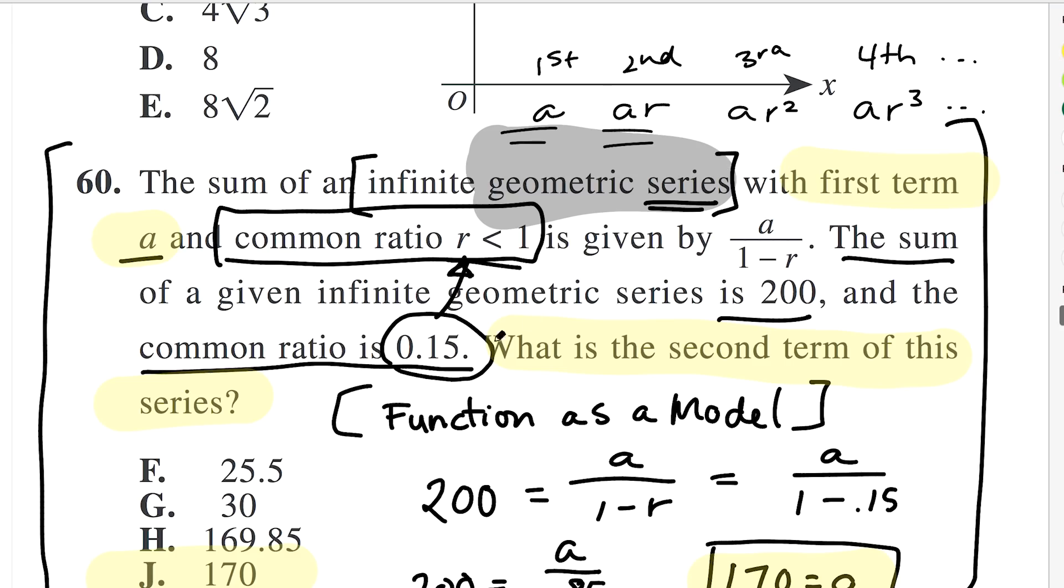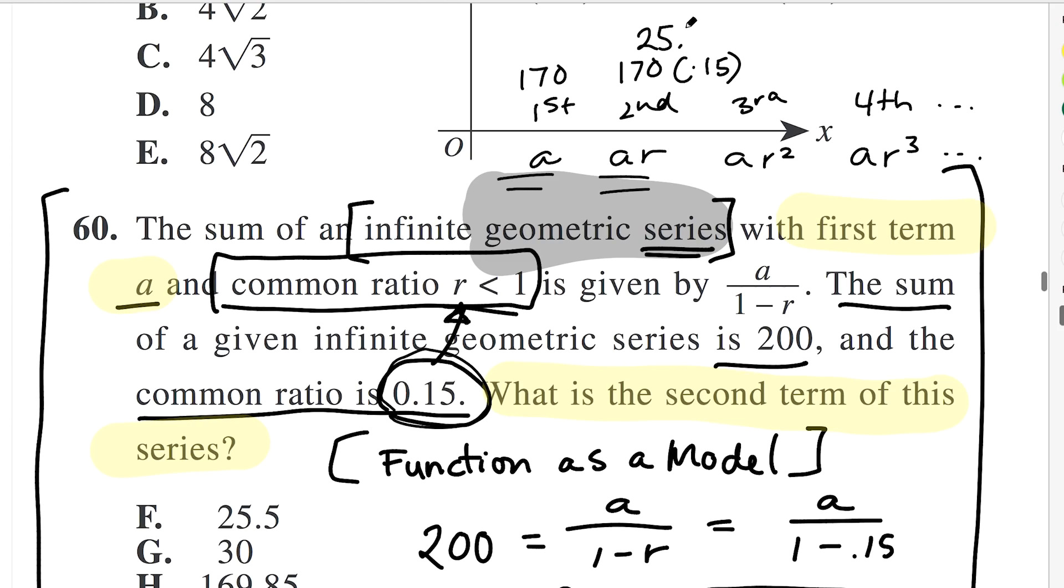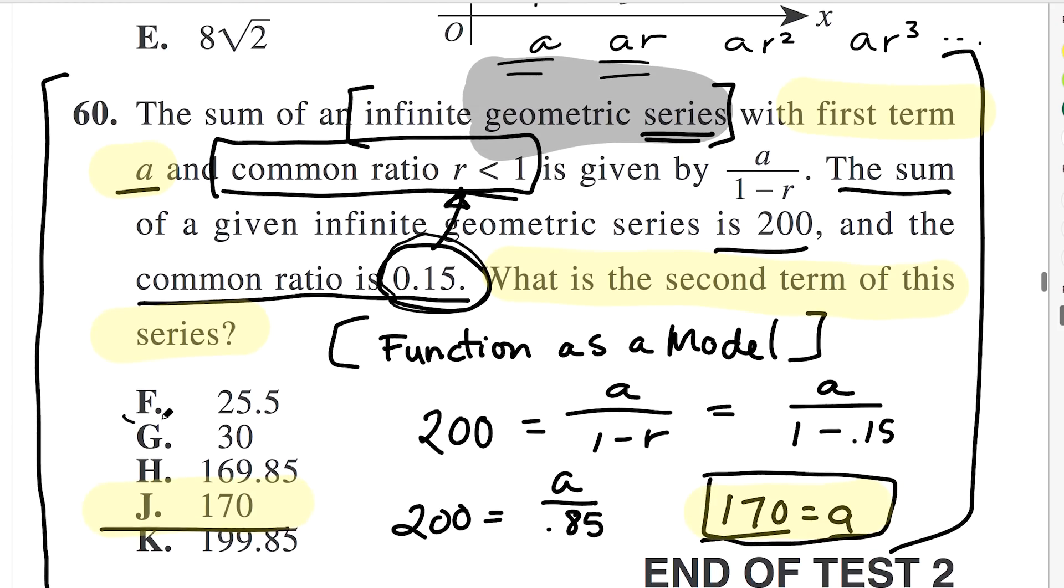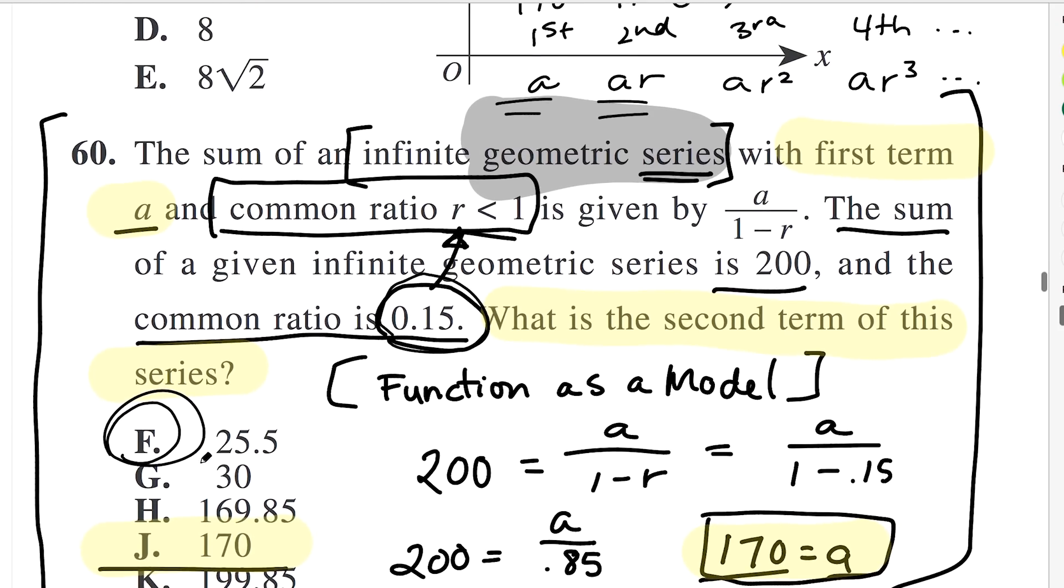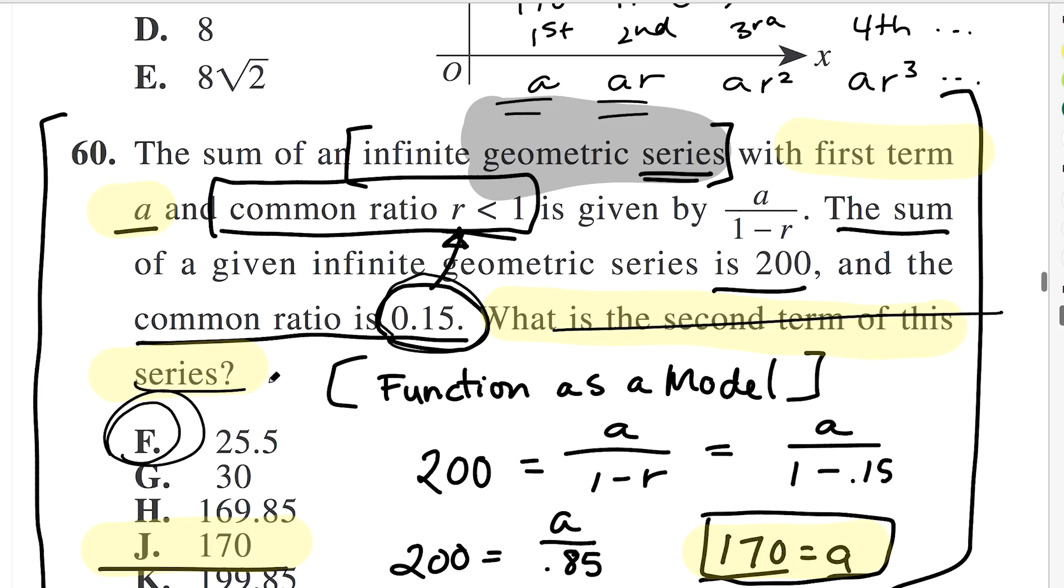And what's going on here is R is 0.15. So my first term is 170. My second term is going to be 170 times my common ratio times 0.15. And so what you do is you do 170 times 0.15 and you get 25.5. So this is 25.5 and that is actually the answer because it's the second term in the series.